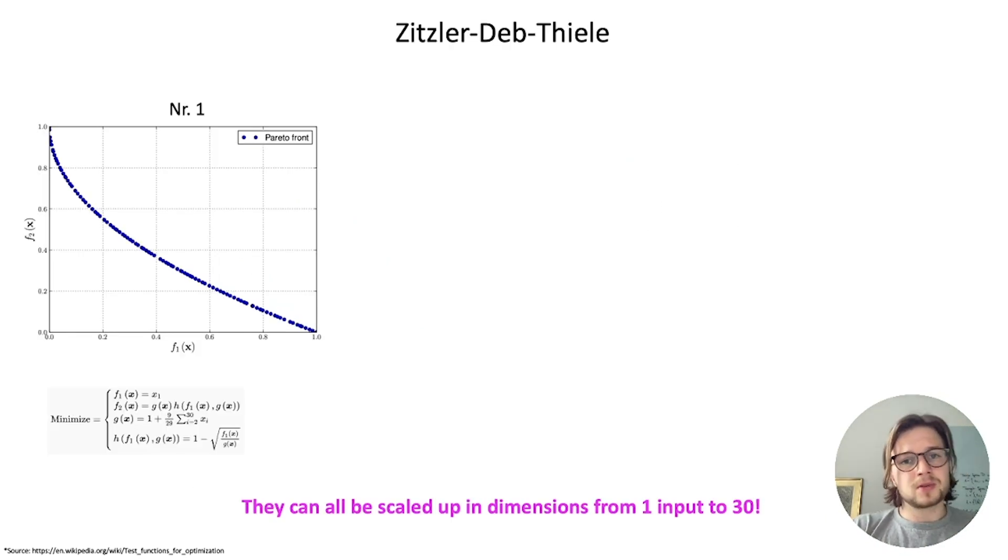Now I want to present you my favorite functions. Why are they my favorite functions? I start with number one here on the left side from Zitzler-Deb-Thiele because these functions can be scaled up within their input dimensions. So you can say I have one input dimension, I have two, three, four, five, six, seven and so on until 30.